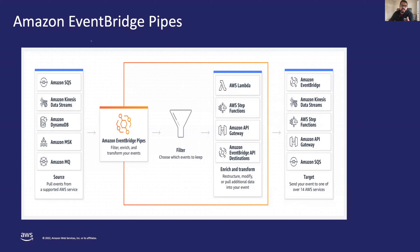Amazon EventBridge Pipes is another new feature. As developers use multiple Amazon services to compose an application, they have to write glue code to communicate between different services, which can be a time-consuming manual exercise. Amazon EventBridge Pipes helps you create point-to-point integrations between event producers and event consumers with optional transform, filter, and enrich steps, reducing the amount of integration code you need to write and maintain when building event-driven applications.